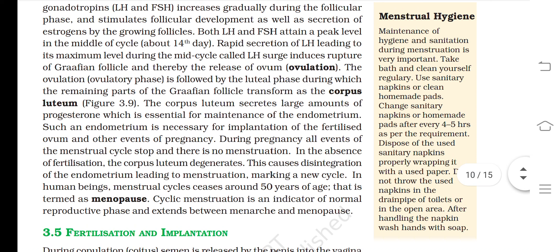Menstrual hygiene: maintenance of cleanliness and sanitation during menstruation is very important. Take bath and clean yourself regularly. Use sanitary napkins or clean homemade pads; change them every 4 to 5 hours. Dispose of used sanitary napkins properly by wrapping with used paper; do not throw in drain pipes, toilets, or open areas. After handling the napkin, wash hands with soap.